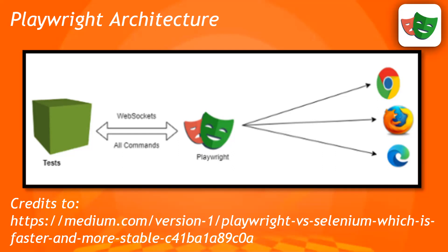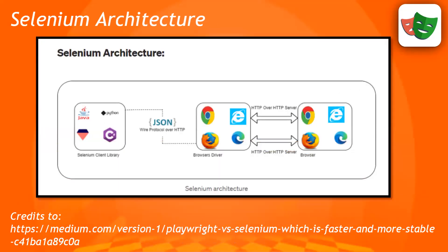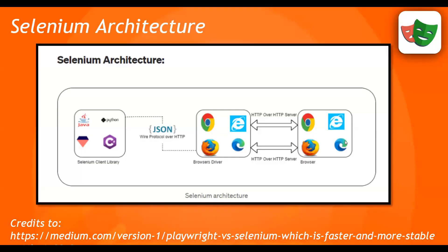References will be mentioned in the description as well, so you can go through the articles to understand more about how web sockets work. For reference, the current Selenium architecture works differently — it uses JSON Wire Protocol over HTTP, and every command is considered a separate request and response. You can clearly see there is an HTTP protocol which connects to the browser driver as an intermediate, and then it connects to the browsers using the HTTP protocol.